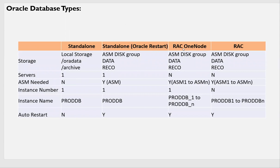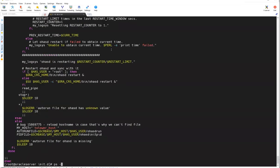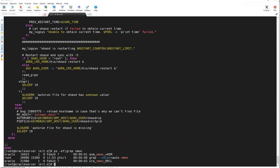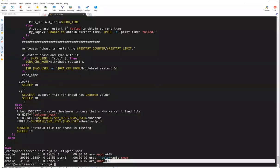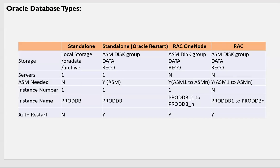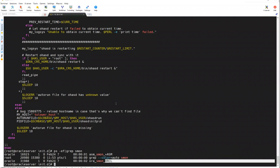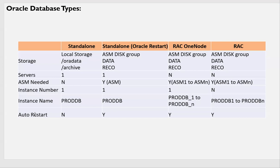Standalone with Oracle Restart: this is our current configuration. Even though it is a standalone database, it is on ASM — that is why they call it Oracle Restart. Storage is an ASM disk group. You need only one server, one instance, and ASM is required. If this server goes down and comes back online, ASM will start automatically and the database will start automatically — that is what auto restart means.